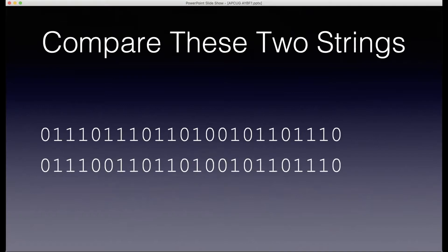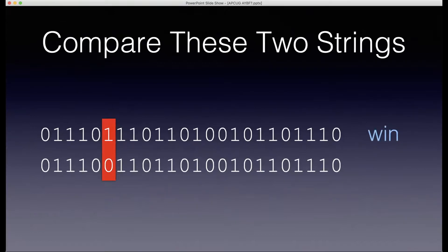Take a glance at these strings of numbers — they look very similar. But if you look closely, you'll see that six digits in, the top line has a one and the bottom line has a zero. That string of ones and zeros happens to be the binary representation of the word 'win.' If you just change one of those ones to a zero, you get a completely different word with a completely different meaning — you've just turned a win into a sin.